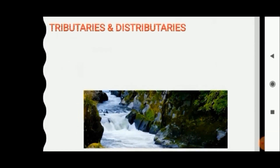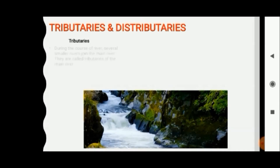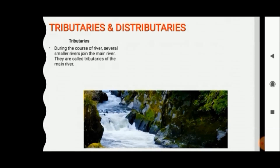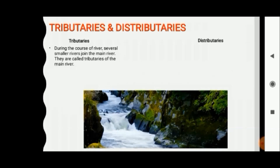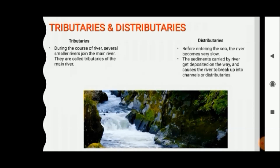What are tributaries? During the course of a river, several small rivers join together and they form the main river. The small rivers which join together are called the tributaries of the main river.